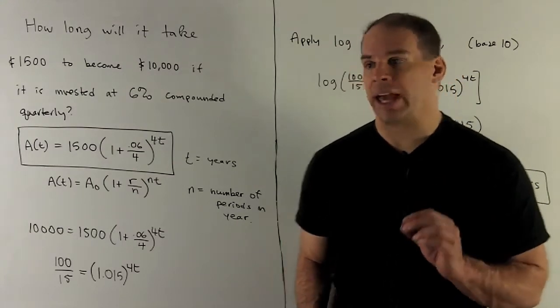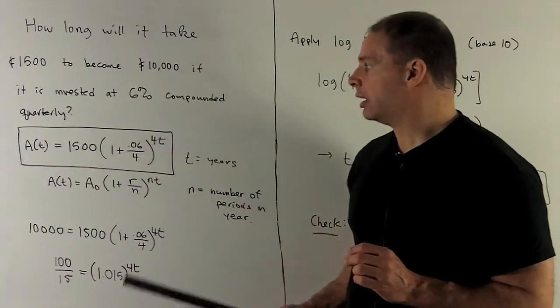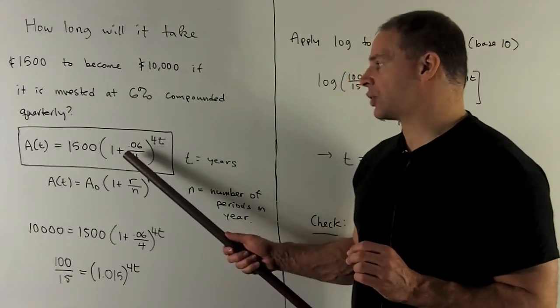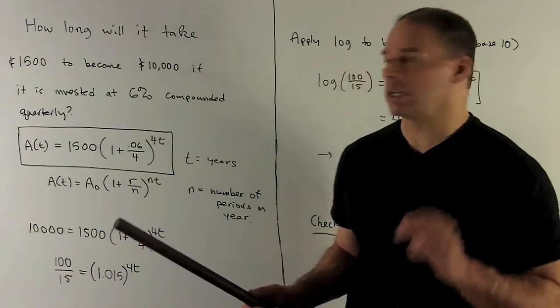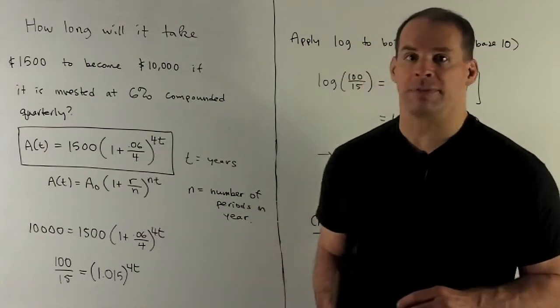So in our special case, initial amount's $1,500, the rate 6%, so I write that as 0.06, and the number of times we're going to compound a year quarterly, that means n is equal to 4.